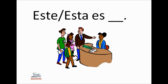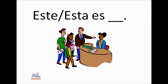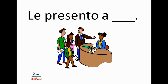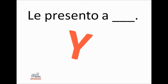If you want to introduce a man, say 'este es' — this is. For example: este es Juan. If you want to introduce a woman, say 'esta es' — this is. For example: esta es Maria. Another common way to introduce others is 'le presento a.' For example: le presento a Maria — meaning 'I introduce you to Maria' or 'allow me to introduce Maria.' If you want to introduce more than one person, say 'y' — meaning 'and' — between the names. For example: le presento a Juan y Maria.